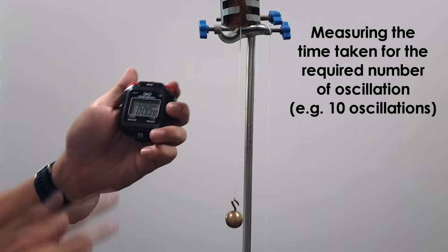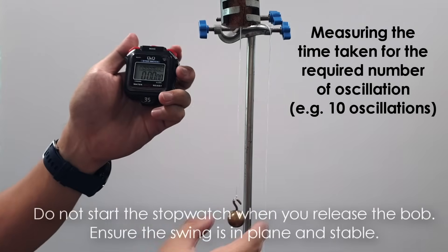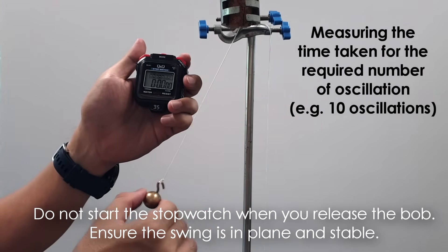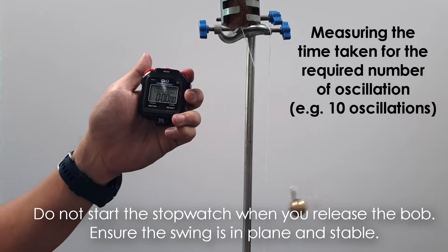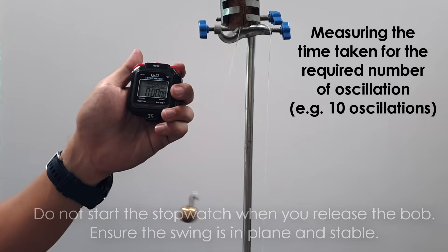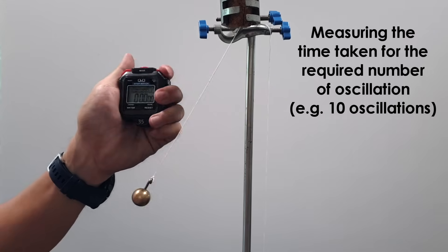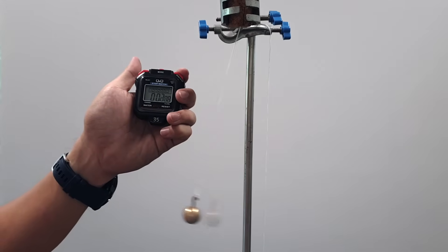Next, get ready the stopwatch, but do not start the stopwatch when you release the ball. Instead, release it, make sure that the swing is stable and in-plane. Once you're satisfied, then you can start the timing.